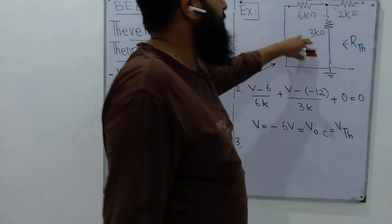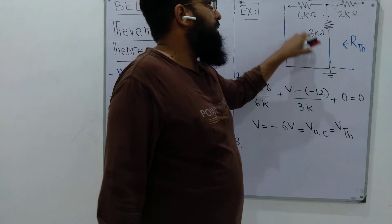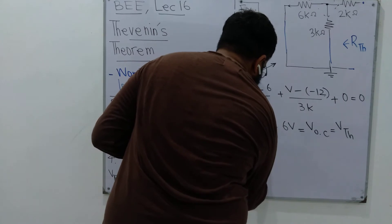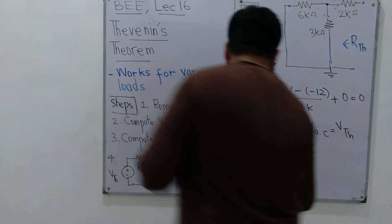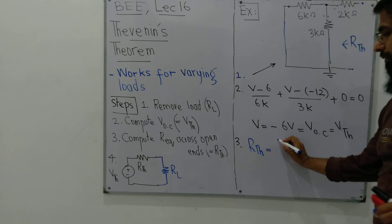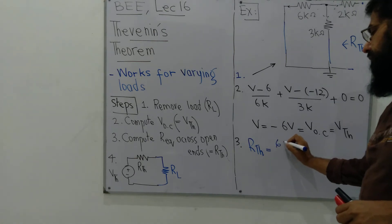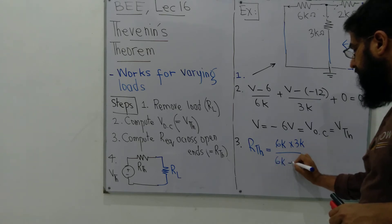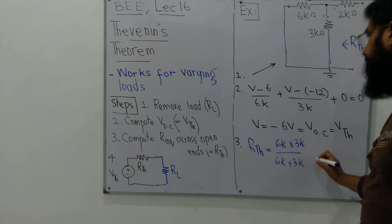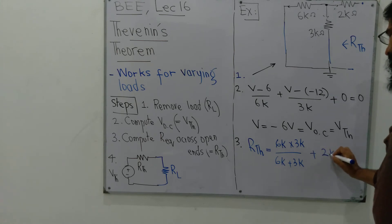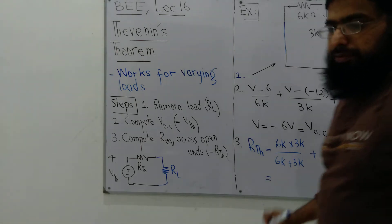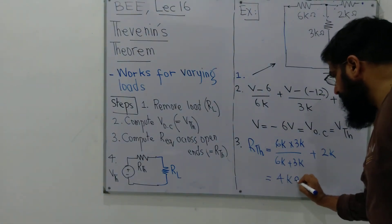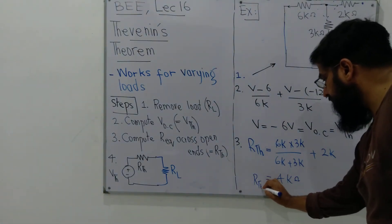Now we have the 6K and 3K in parallel, and this 2K is in series with this parallel combination. So Rthevenin is 6K in parallel with 3K, which is 6K times 3K over 6K plus 3K, plus 2K. Rthevenin is computed to be 4kΩ.